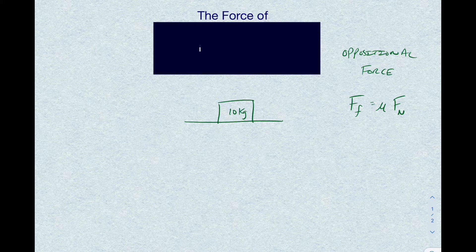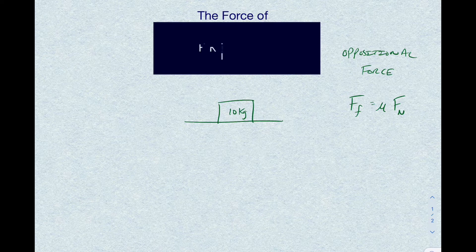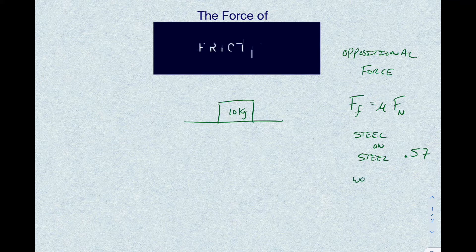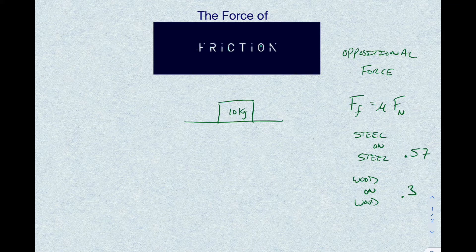Mu is the coefficient of friction — it describes the relationship between two different surfaces and tells you how frictionful it is. It's in your reference table. For example, steel on steel is about 0.57 — no units at all, just a number. Wood on wood is something like 0.3. These are approximations, but they give us values to work with.